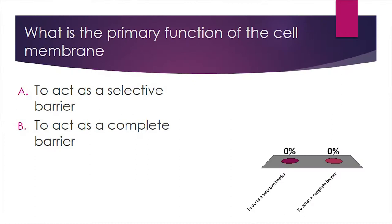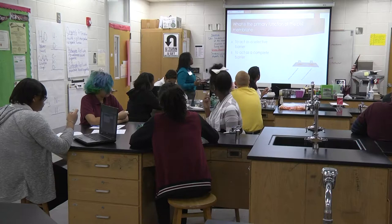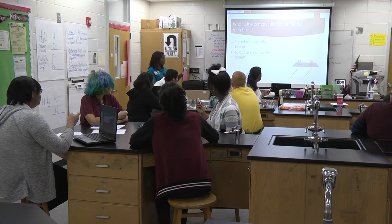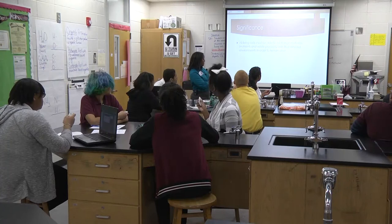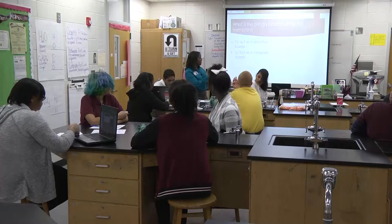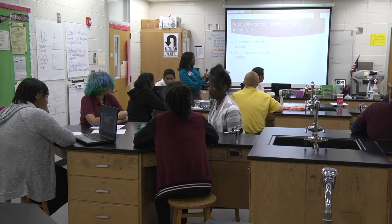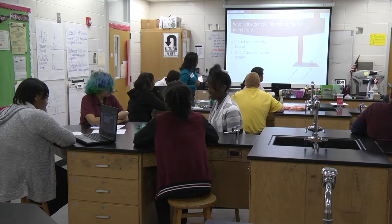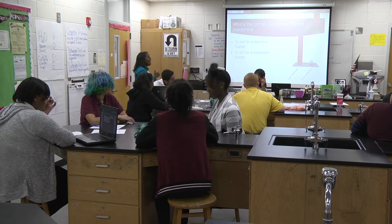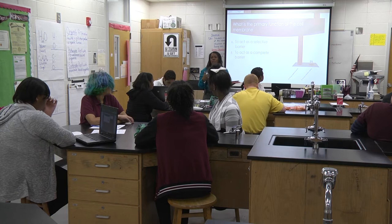Using your student response systems, answer this question: what is the primary function of the cell membrane? A: to act as a selective barrier, or B: to act as a complete barrier? Very good — to act as a selective barrier. Keep in mind that the cell membrane doesn't completely stop everything; it does allow some things to cross. So it's very selective, it's picky.